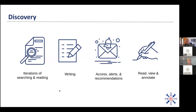In this, we're going to look at iterations of searching and reading. As was pointed out earlier, you often get stuck in a loop where you have to go from analysis back to researching, back to your analysis, back to researching — or you might be looking for new materials, or you might even get to the point where you've already written your article and then you get feedback from reviewers and have to go back to searching and reading to find more information to clarify certain points. We're also going to look at tools for writing, tools for accessing articles and research, getting alerts and recommendations, and for reading, viewing, and annotating research material.